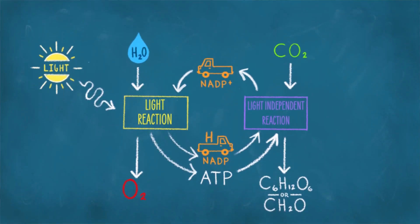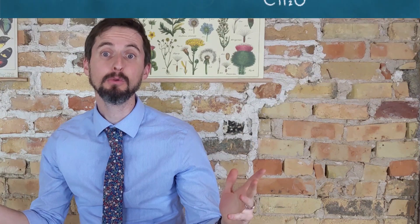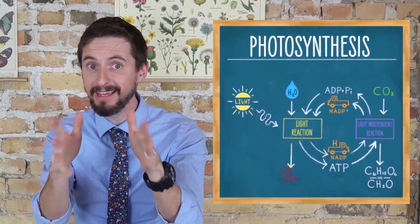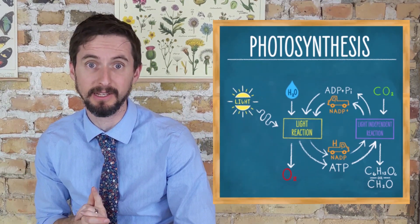If only we had a source of energy to reassemble ATP from ADP and inorganic phosphate — the sun! ADP and inorganic phosphate head over to the light reaction where they are reassembled into ATP to power the light-independent reaction in the future. And if you look for a simplified diagram of photosynthesis, this is generally what you'll see.